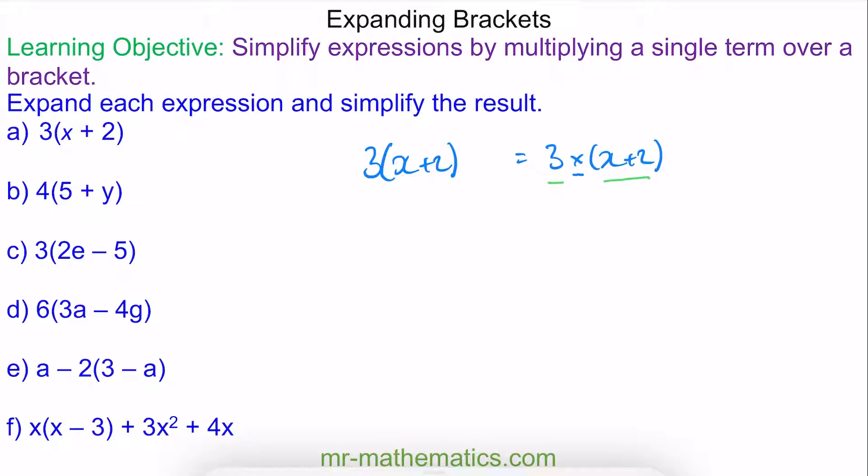We begin by multiplying the 3 by the x, which we write as 3 times x. And then we have 3 multiplied by 2, which is 6. And we simplify the 3 times x as 3x plus 6.